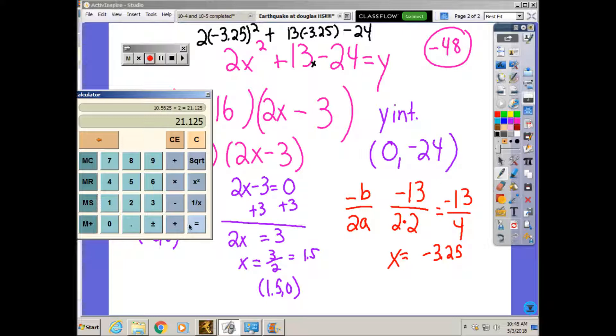And here, you should add 21.125. I want to double-check that. 3.25 times 3.25 times 2. That is correct.